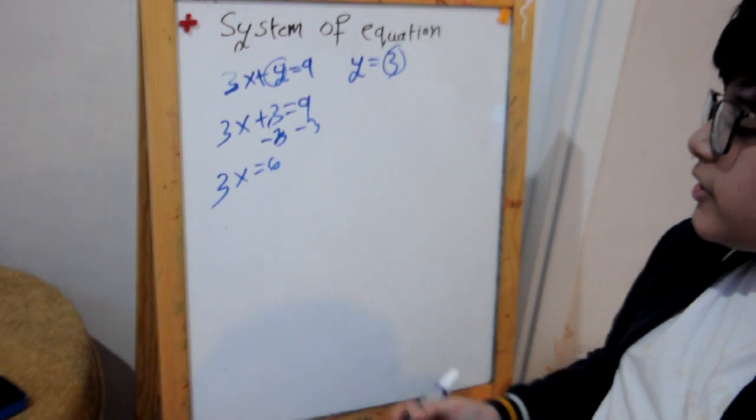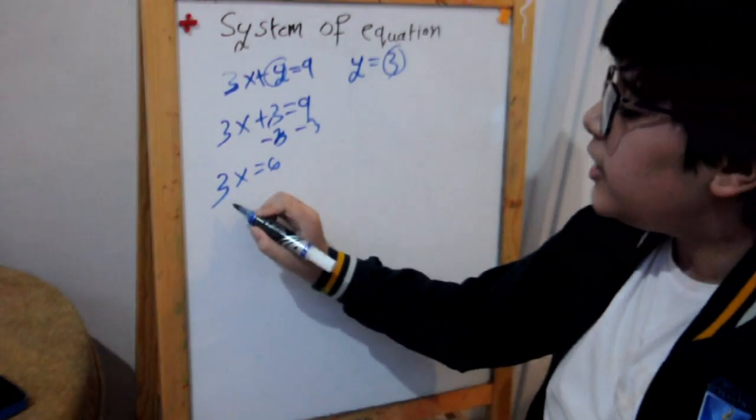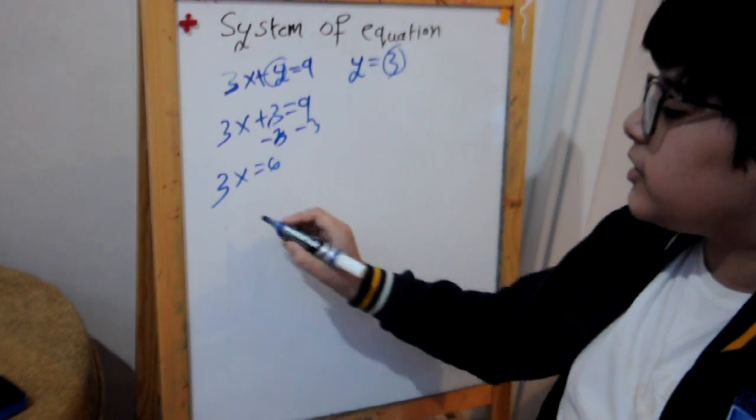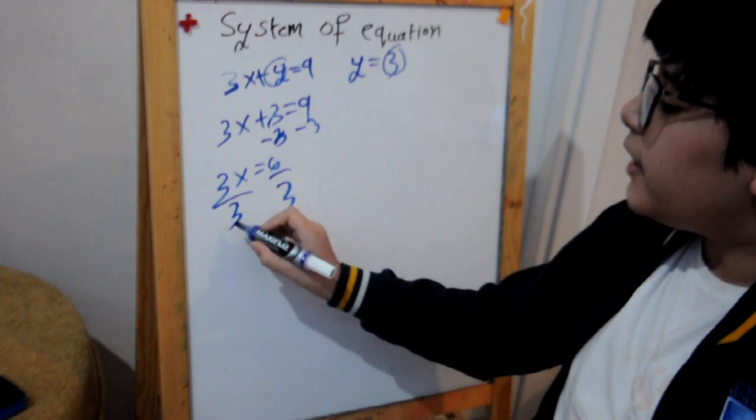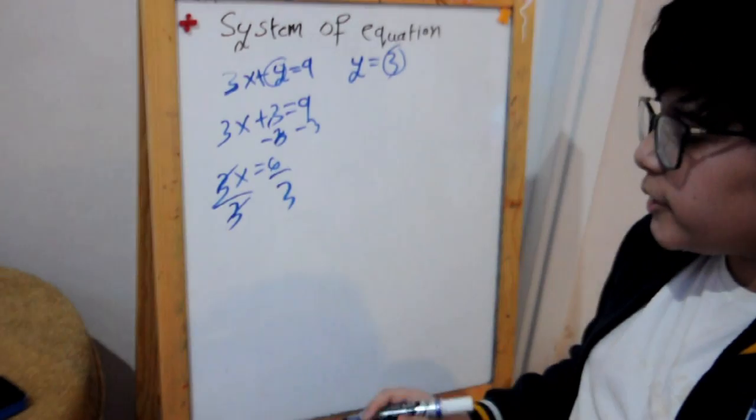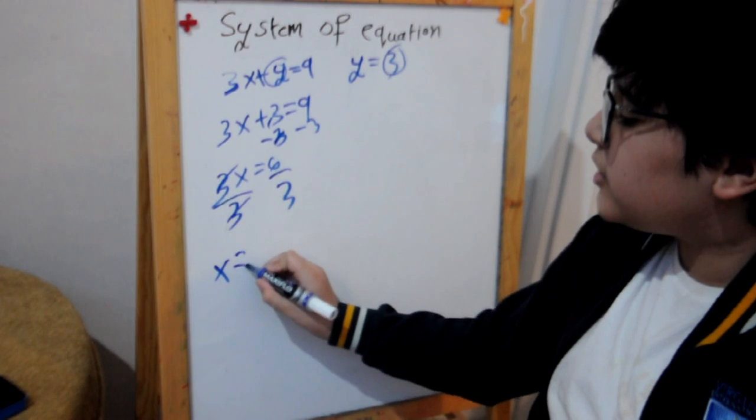Now, for another way to solve this, you will divide 3 on both sides. So 3 and 3. Here, 3 and 3 will go away. So x equals 2.